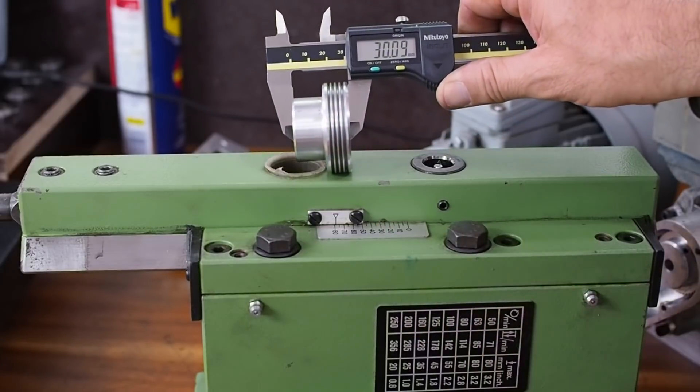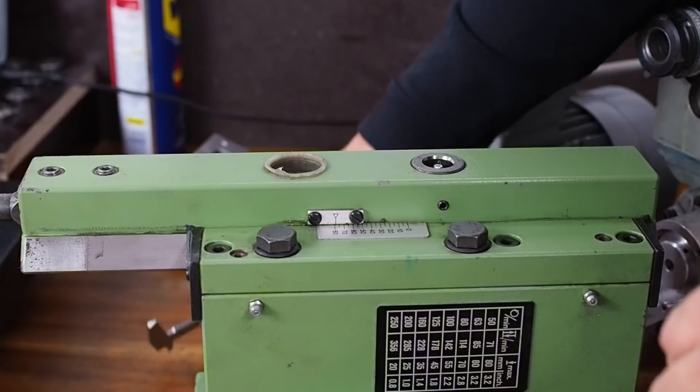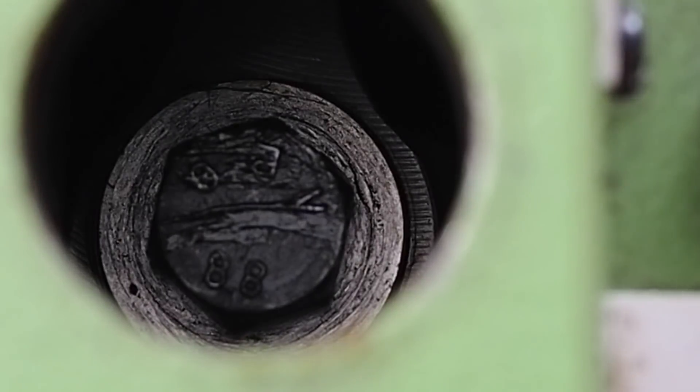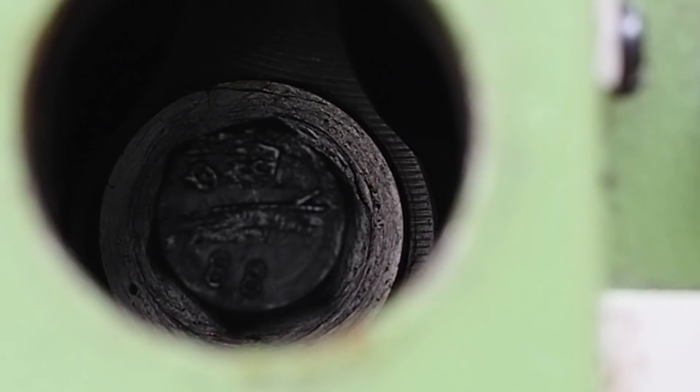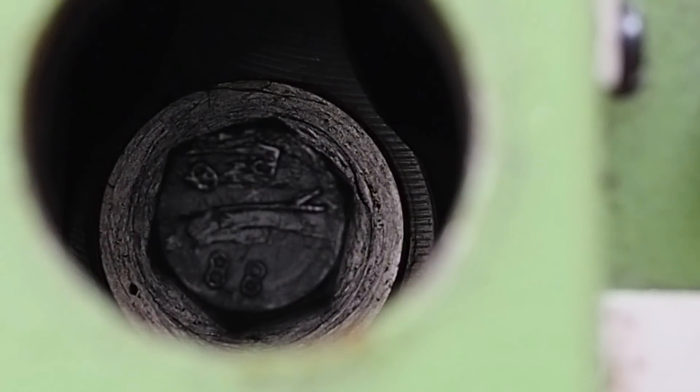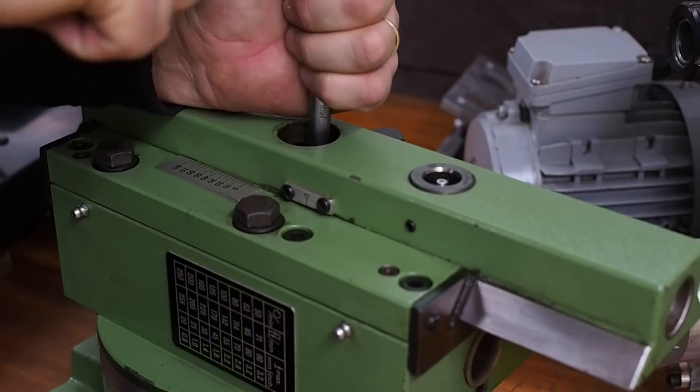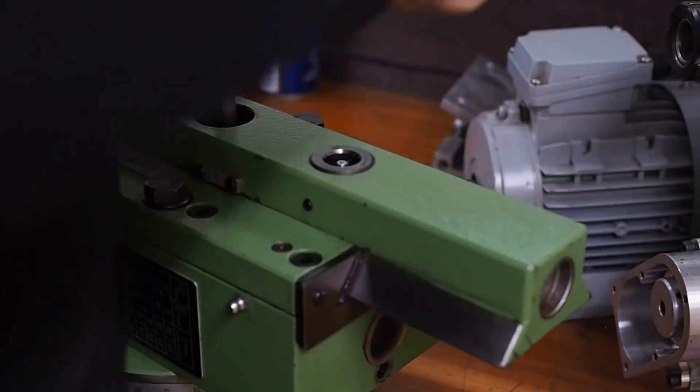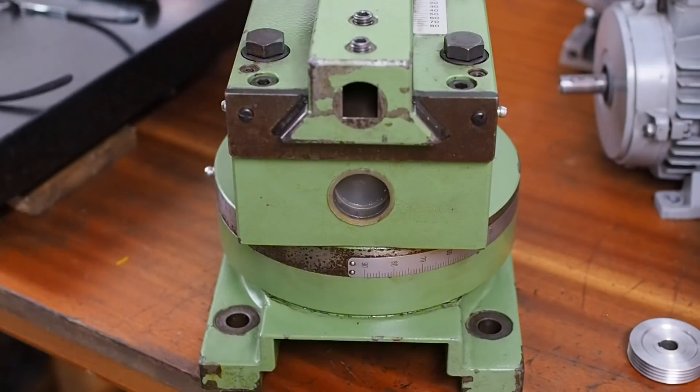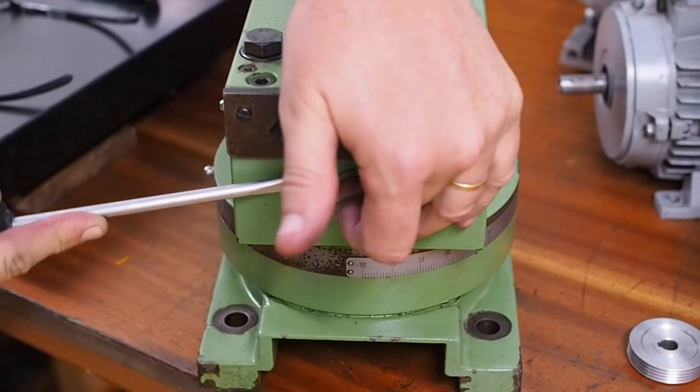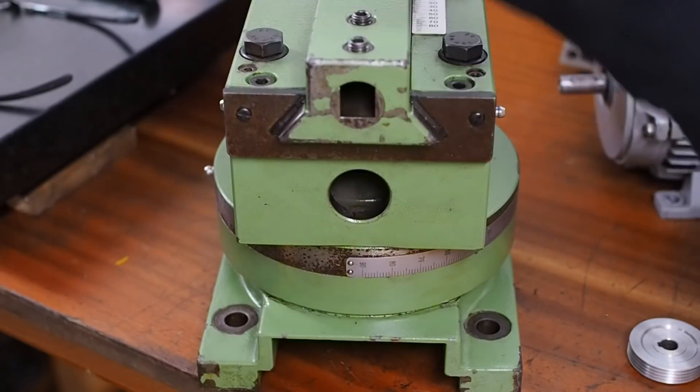Next we need to set up the slotting head. For this job I need a stroke of about 30 millimeters, let's say plus 10 so about 40 millimeters. The stroke is set through this plug hole. This is just a typical scotch yoke design as you find on any shaper or slotting head where you loosen off this 15 millimeter bolt and adjust the eccentricity of the throw.